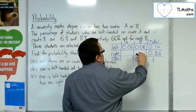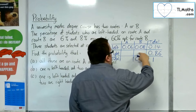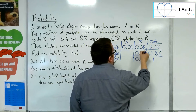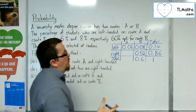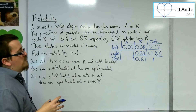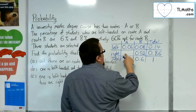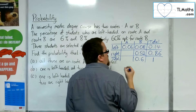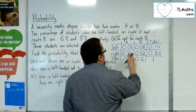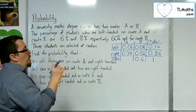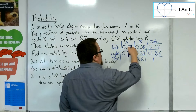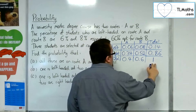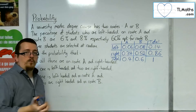The right-handed people on route B must be 0.6 minus 0.08, which equals 0.52. So 52% of the cohort are right-handed and doing route B. Those who are right-handed on route A must be 0.86 minus 0.52, which is 0.34 — so 34% of the total cohort. And 0.34 plus 0.06 adds up to 0.4, so that 0.4 and 0.6 sum to 1. That completes the two-way table.